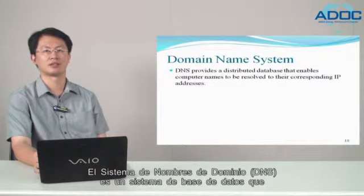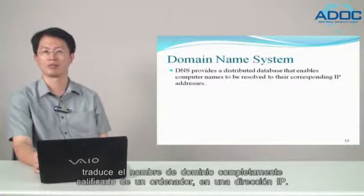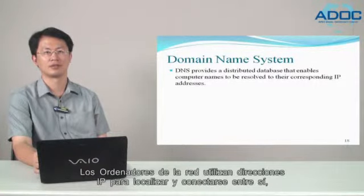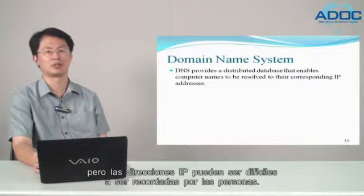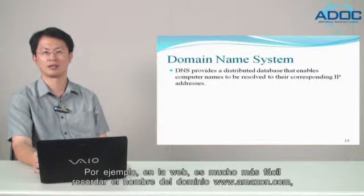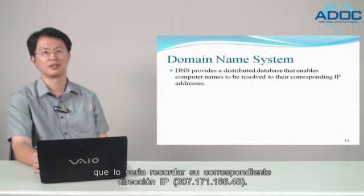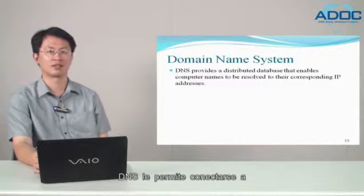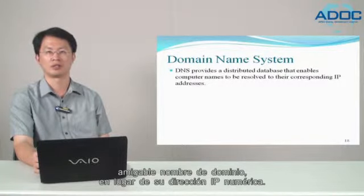Name resolution doesn't happen automatically in the background — a computer process translates the computer name you type into an IP address that computers can understand. Domain Name System, DNS, is a database system that translates a computer's fully qualified domain name into an IP address. Networked computers use IP addresses to locate and connect to each other, but IP addresses can be difficult for people to remember. For example, it is much easier to remember www.amazon.com than its corresponding IP address.